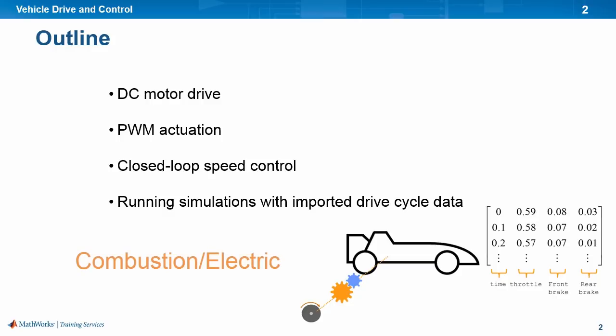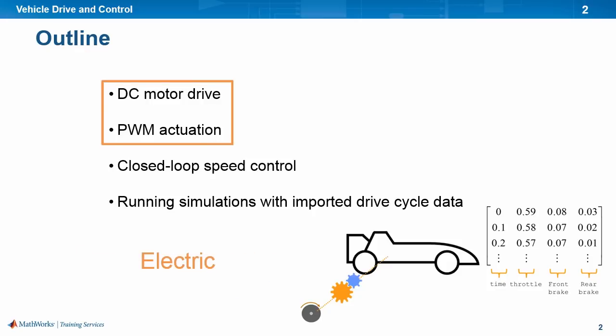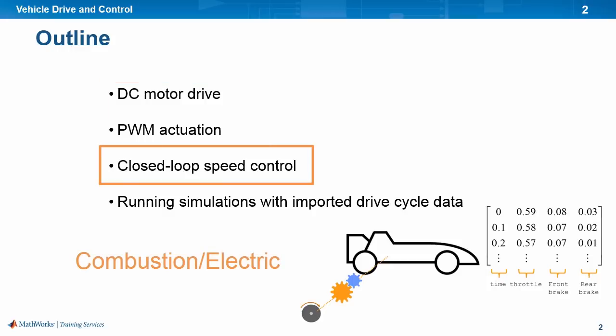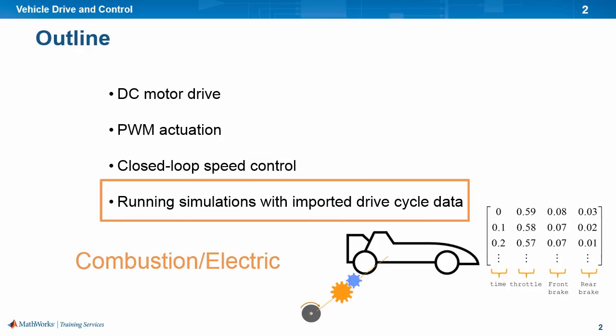This training will be applicable for both the combustion engine and electric teams. We are going to talk about DC motors, which is specifically useful to electric teams. Although the control concepts here are explored with DC motors, a similar workflow can be applied to combustion teams as well — for example, throttle control. Finally, running simulations with imported drive cycle data will be useful for both teams.